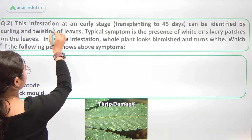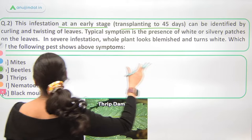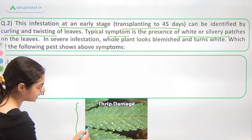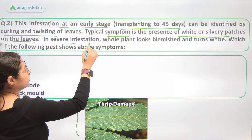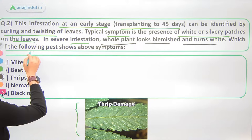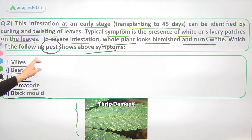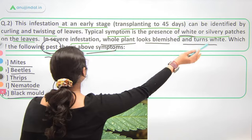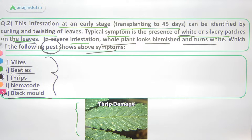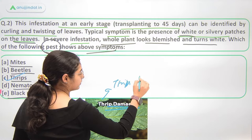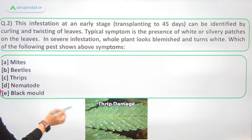Second question: This infestation at an early stage — transplanting up to 45 days — can be identified by curling and twisting of leaves. A typical symptom is the presence of white or silvery patches on leaves. In severe infestation, the whole plant looks blemished and turns white. Which pest shows these symptoms? Options: mites, beetle, thrips, nematode, or black mold. The answer is option C — thrips. Scientific name: Thrips tabaci.